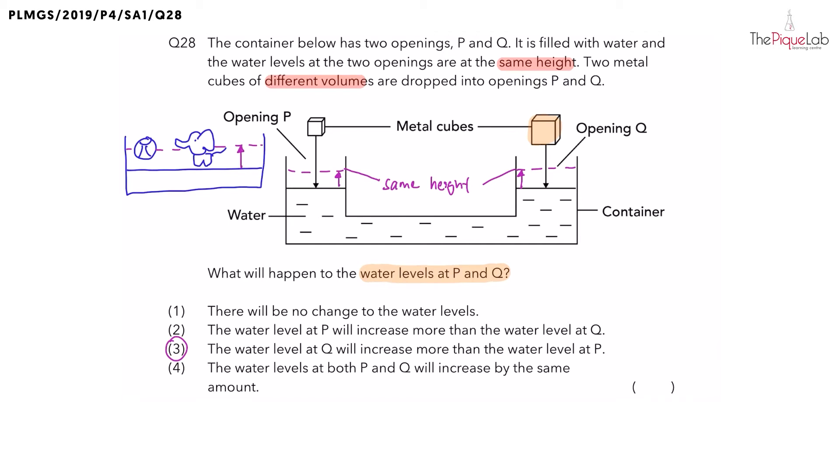Now, what causes the water level to be pushed up to the same height? It must be caused by the metal cubes. And in order for the metal cubes to push the water, this means that the water is being, what's the keyword? Displaced.